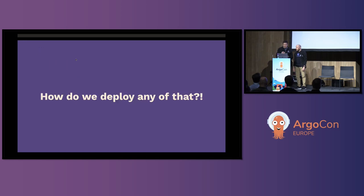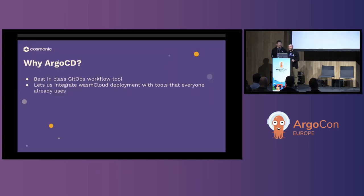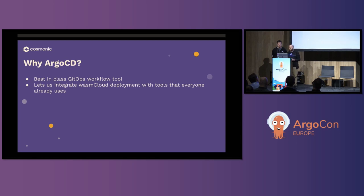You might be asking yourself — how do you deploy any of that? The answer is Argo. We ended up spiking on this a while back and settled on Argo CD as a way to deliver these applications, particularly for people already running Kubernetes, because frankly it's the best-in-class GitOps tool we've been able to find. There are obviously other good ones — Flux is solid — but we settled on Argo because of the functionality, and it really let us integrate our Wasm Cloud deployment with tools everybody in the ecosystem is already familiar with.